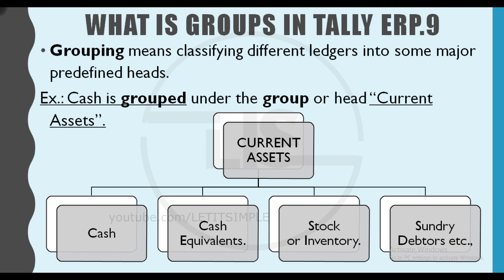We have various classifications and a group of ledgers — cash, cash and cash equivalents, stock or inventory, sundry debtors, etc. Right now, there are groups of current assets. We have multiple ledgers.